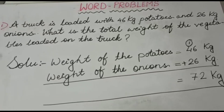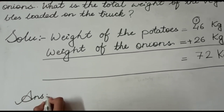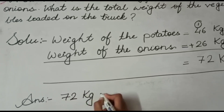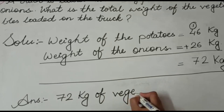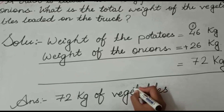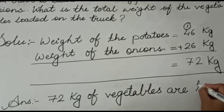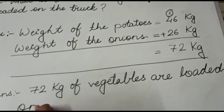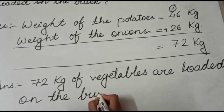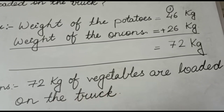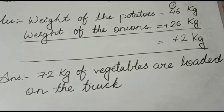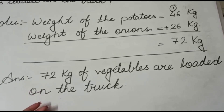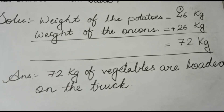Now we will write the answer. 72 kg of vegetables are loaded on the truck. Or you can write: the total weight of the vegetables loaded on the truck is 72 kg. Both sentence formations are correct. This is the procedure of word problems of addition.